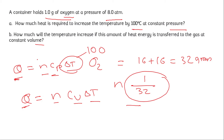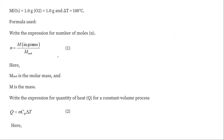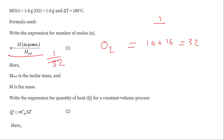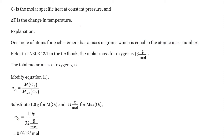Let's write the equation for heat required to increase temperature by 100 degrees Celsius at constant pressure: Q = nCpΔT. The number of moles is n = m/M_mole, where the molar mass of oxygen is 16 plus 16 = 32 g/mol and the mass of gas is 1 gram, giving n = 1/32. Here, Cp is the molar specific heat at constant pressure, ΔT is the change in temperature. The number of moles of O₂ comes out to be 0.03125 moles.